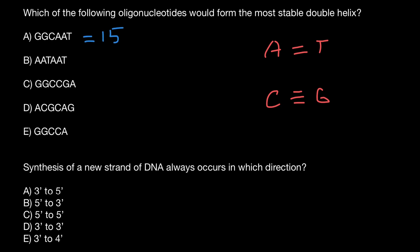The next variant would give us double, double, double, double, double hydrogen bonds, so the total number of hydrogen bonds is going to be 12.